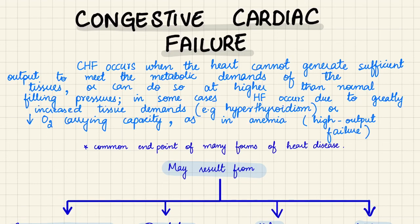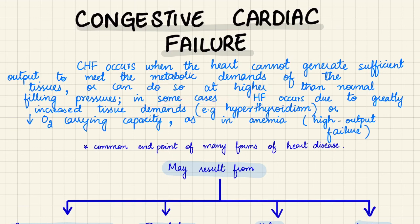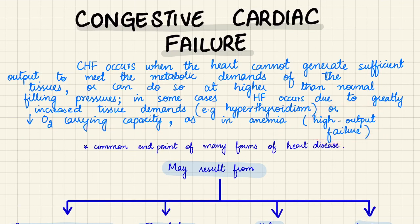Congestive cardiac failure occurs when the heart cannot generate sufficient output to meet the metabolic demands of the tissues. Alternatively, it can do so only at higher than normal filling pressures, which comes at a cost. In some cases, heart failure occurs due to greatly increased tissue demands, for example in hyperthyroidism due to increased metabolic rate, or decreased oxygen carrying capacity as in anemia — this is known as high output failure.